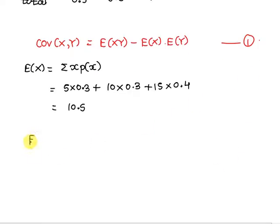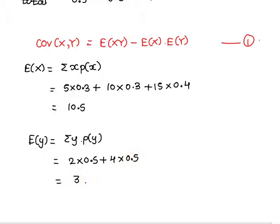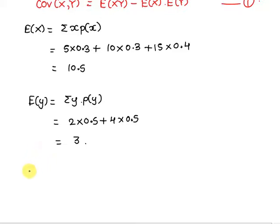Similarly, we can compute the expected value of Y, which is equal to the summation of y times probability of y. This is equal to 2 times 0.5 plus 4 times 0.5. The expected value of Y is equal to 3.